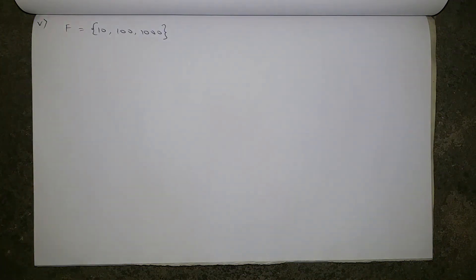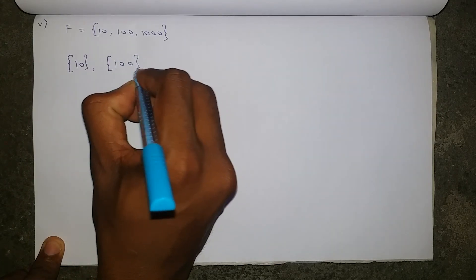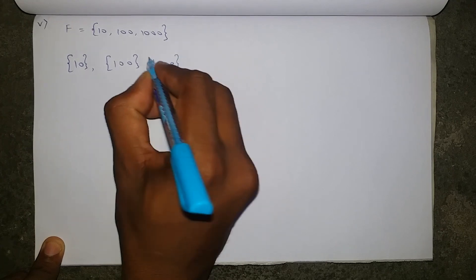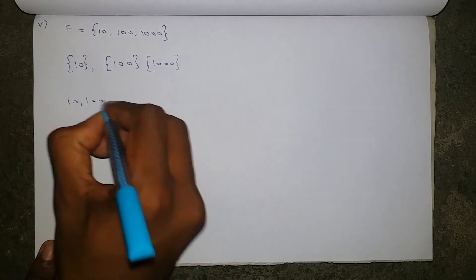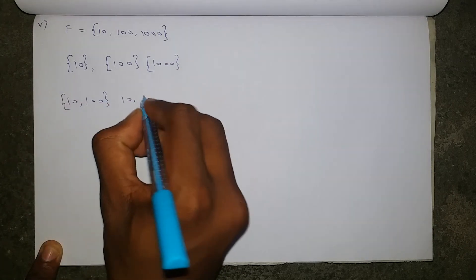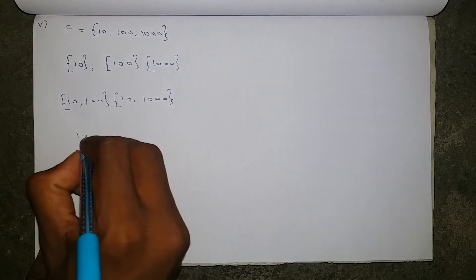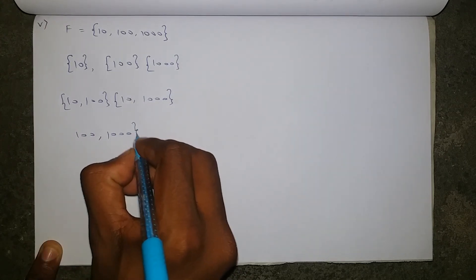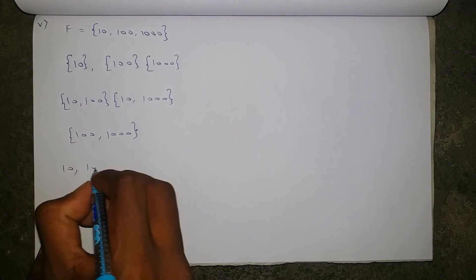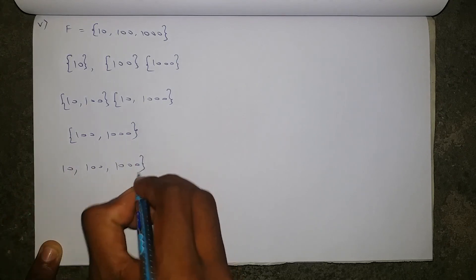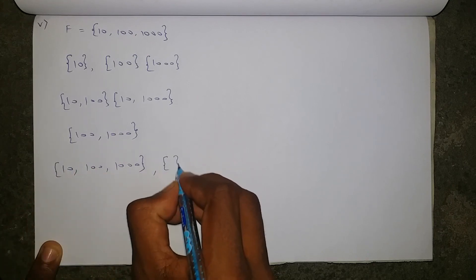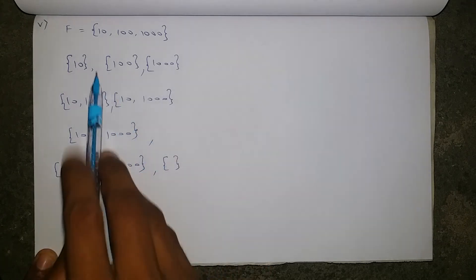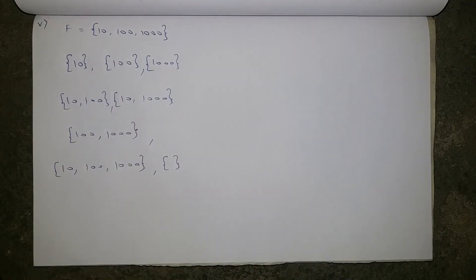The last problem: set F equals {10, 100, 1000}. Single elements: {10}, {100}, {1000}. Two elements: {10, 100}, {10, 1000}, {100, 1000}. All three together: {10, 100, 1000}. Include the empty set. Set F has 3 elements so 2^3 = 8. Counting confirms all eight subsets are covered.